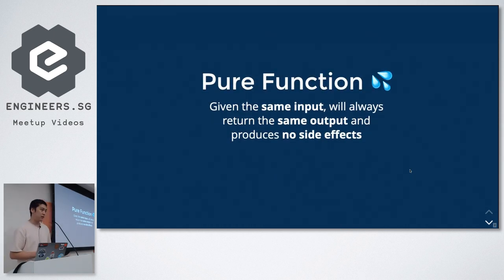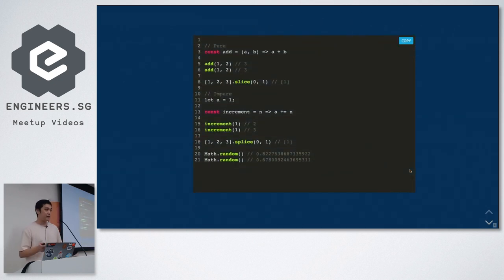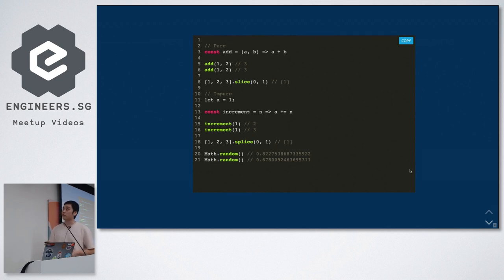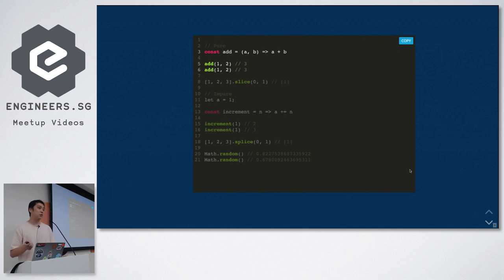The first concept I want to share about functional programming is purity. A pure function means when you give the same input, it always generates the same output without producing any side effects — just like a math function. For example, an 'add' function that takes two parameters a and b and returns their sum: if you evaluate it twice with the same arguments, you get the same output. The huge benefit is that you can easily do memoization and testing because it's pure.